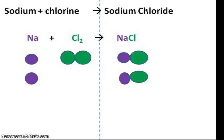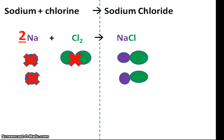Now I need to count how many lots of each atom I have. For sodium, I have two lots, so before the symbol of sodium I need to write a big two. Here I have one molecule of chlorine, so I could write a one, or I could just leave it blank. And finally, I have two molecules of sodium chloride, so before the sodium chloride symbol here I need to add a big two. This means two atoms of sodium react with a chlorine molecule to produce two sodium chlorides.